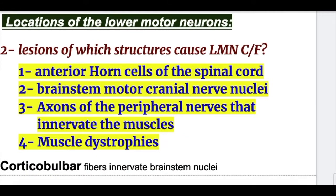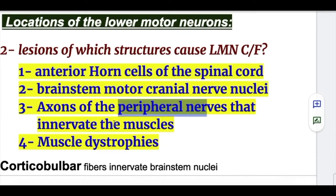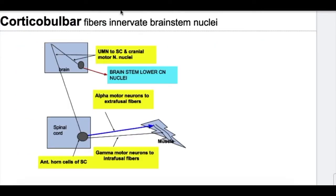Acquired defects of lower motor neurons can occur at the anterior horn cells of the spinal cord, brainstem motor cranial nerve nuclei, axons of peripheral nerves innervating muscle, the neuromuscular junction, and muscle. Corticobulbar fibers synapse in the cranial nerve nuclei of the brainstem, and the corticospinal tract ends at the anterior horn cells of the spinal cord, controlling both structures.